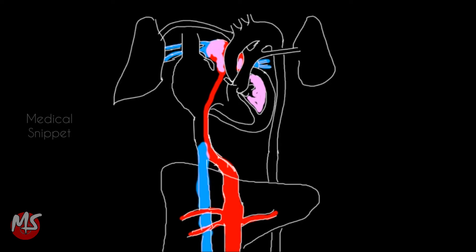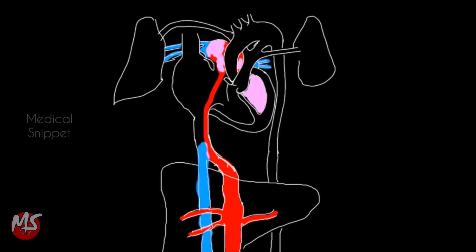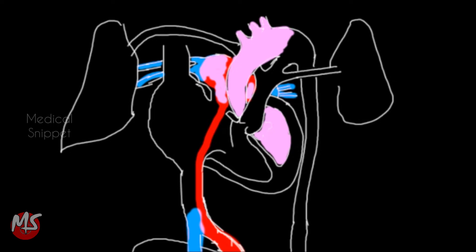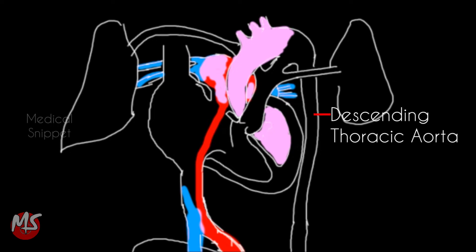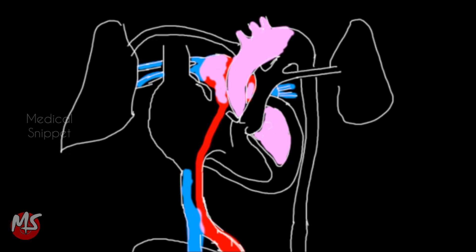The oxygenated blood then enters the left ventricle and is pumped into the aorta, where it enters the coronary, cerebral, and upper limb circulation. Only a small portion of left ventricular output reaches the descending thoracic aorta.